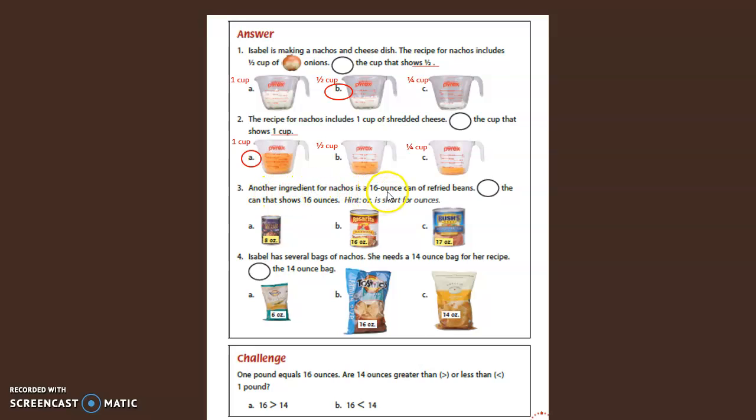Another ingredient for nachos is a sixteen-ounce can of refried beans. Circle the can that shows sixteen ounces. So here's a hint. OZ is short for ounces. Again, OZ is short for ounces.